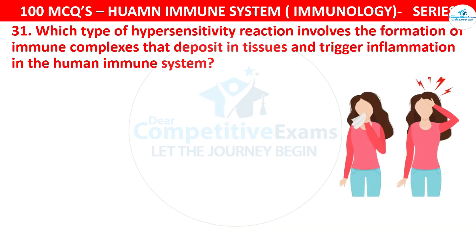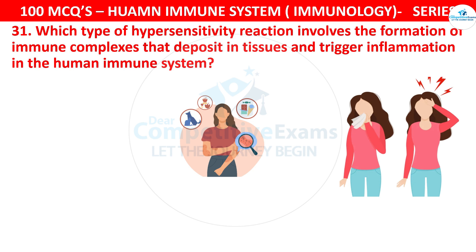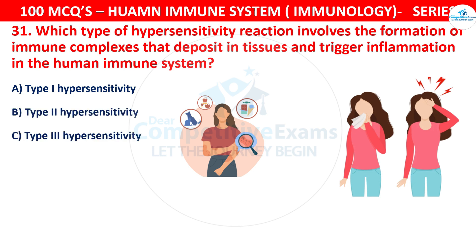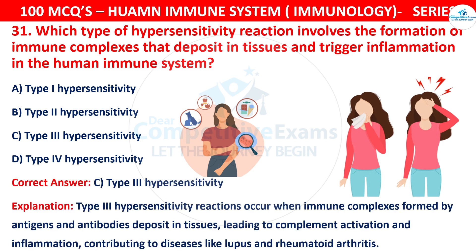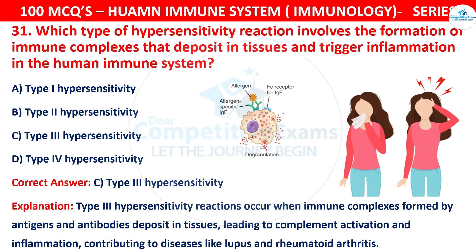Question 31: Which type of hypersensitivity reaction involves the formation of immune complexes that deposit in tissues and trigger inflammation in the human immune system? The options are Type 1, Type 2, Type 3, or Type 4 hypersensitivity. The correct answer is C, that is Type 3 hypersensitivity. Type 3 hypersensitivity reactions occur when immune complexes formed by antigens and antibodies deposit in tissues, leading to complement activation and inflammation, contributing to diseases like lupus and rheumatoid arthritis.